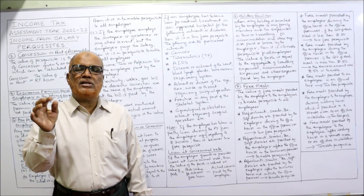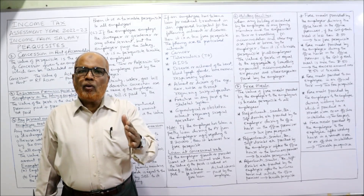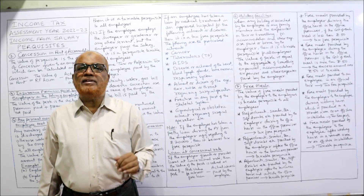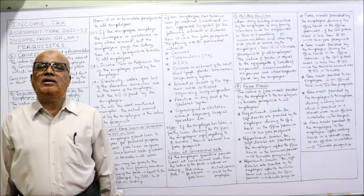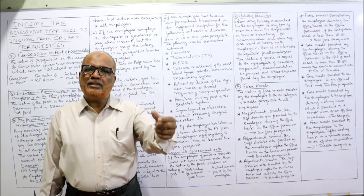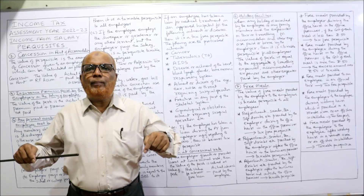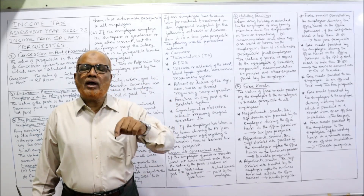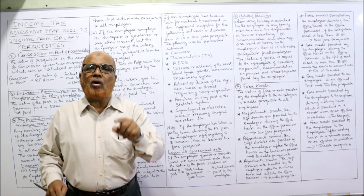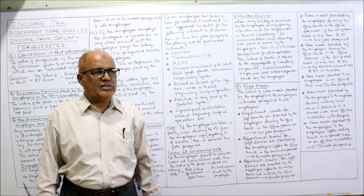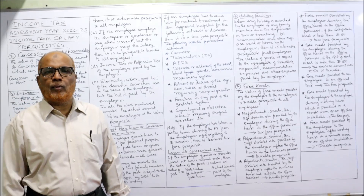The sixth point is holiday facilities. If the employer provides holiday facilities to the employee or their family members, it is a taxable perquisite for every employee. The value of the perquisite is the total expenditure incurred by the employer on traveling, accommodation, or any other expenses paid by the employer for the holiday facility.